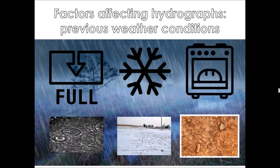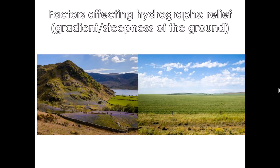Exactly the same thing can happen if it becomes too hot. Even in the UK, we do get baked ground where the top of the soil becomes hard because it's been baked by the sun. When water falls onto that ground, even though it's probably empty because it's been so dry and hot, it will be hard on the top. So the water will flow across and over it, therefore creating a short lag time and lots of water reaching the river.